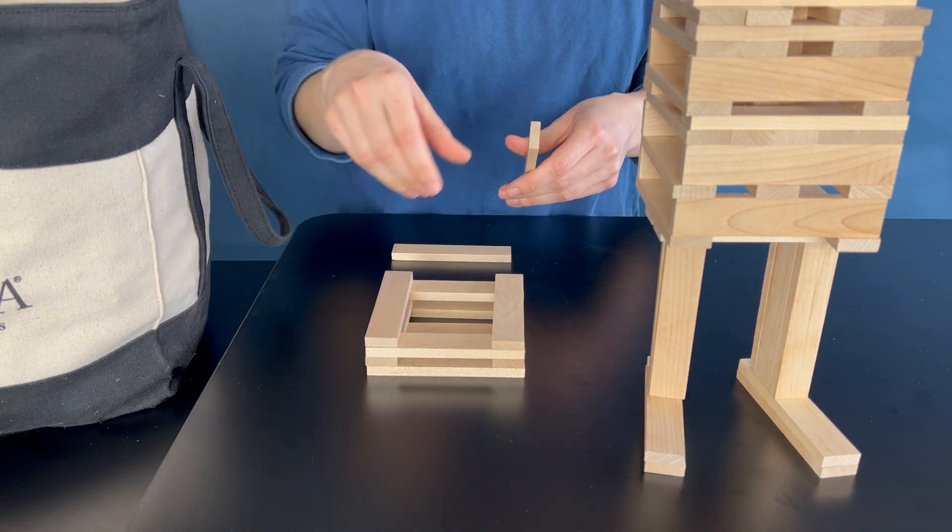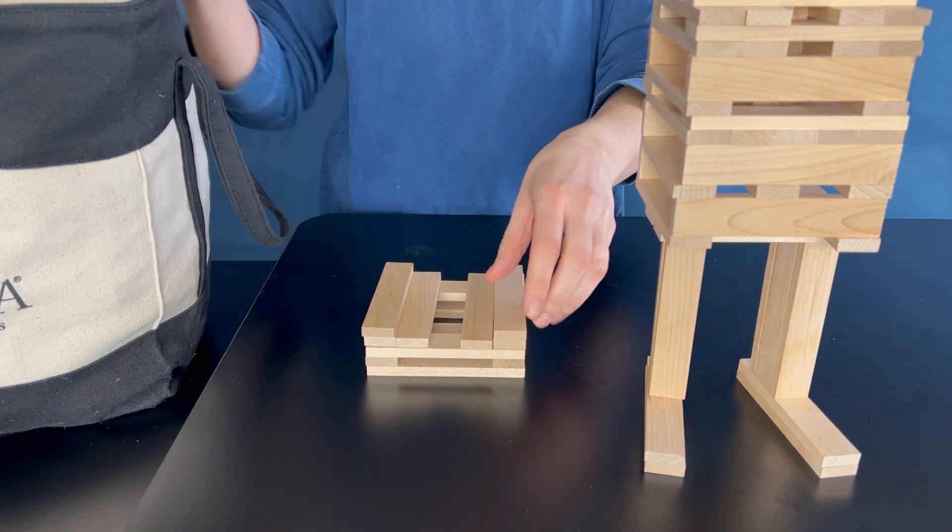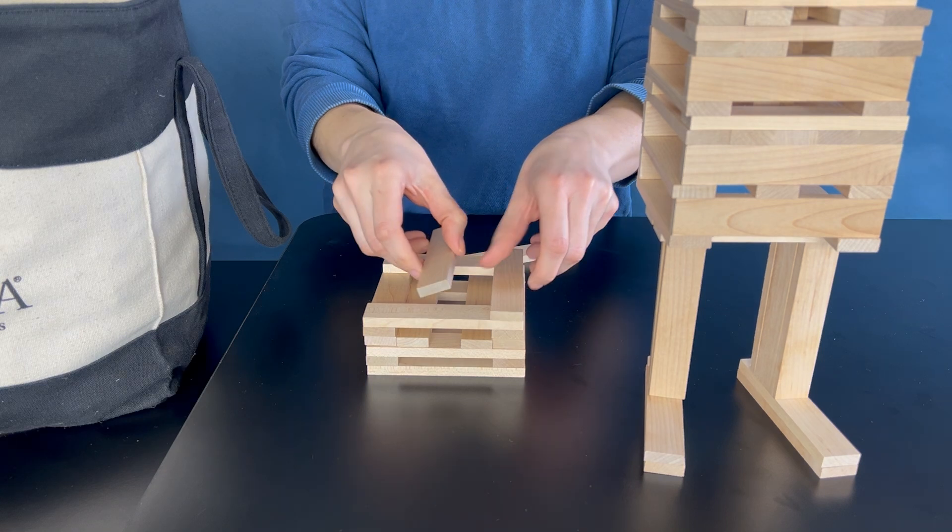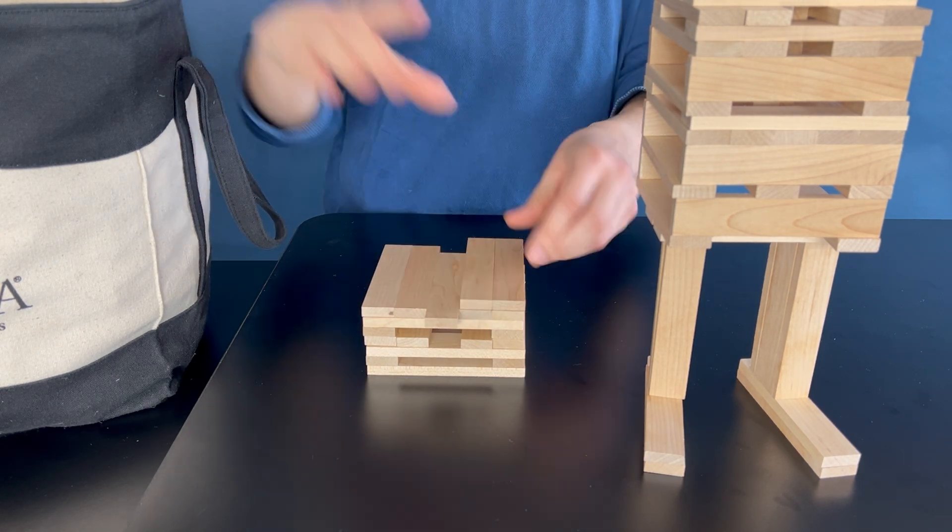I like to start building the head on the table flat because it's a lot easier to build on the flat surface and then pick it up as a unit and place it on the neck rather than trying to balance them as I build on top of the neck.